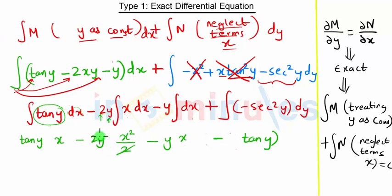as x into tan y minus x square y minus xy minus tan y equal to some constant. Remember, whenever we take integration there is some constant c. So this is the solution of this problem.